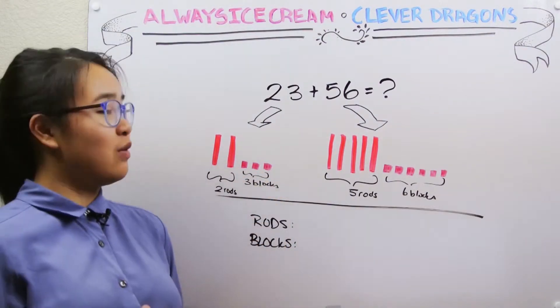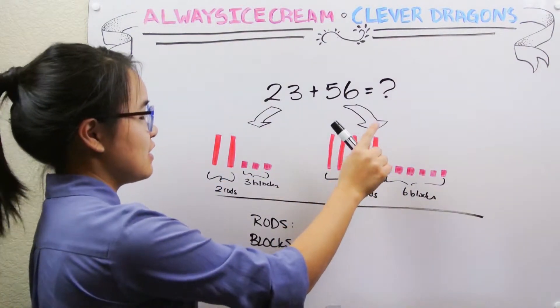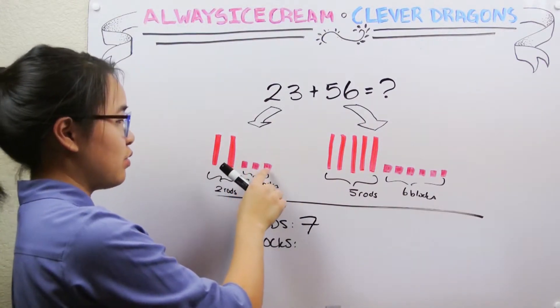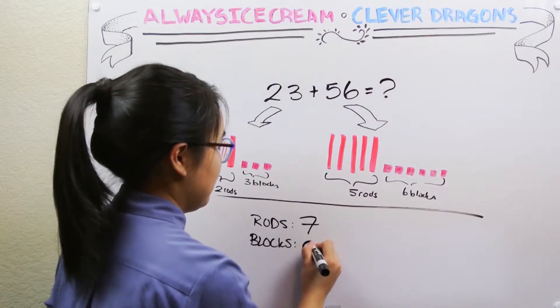So if we were to do that, we would have one, two, three, four, five, six, seven rods, right? And one, two, three, four, five, six, seven, eight, nine unit blocks.